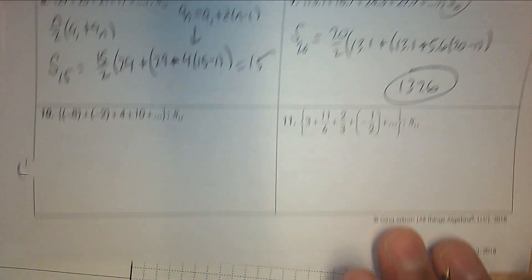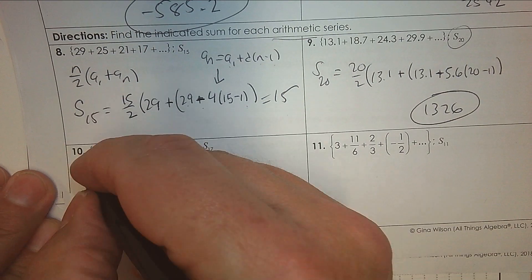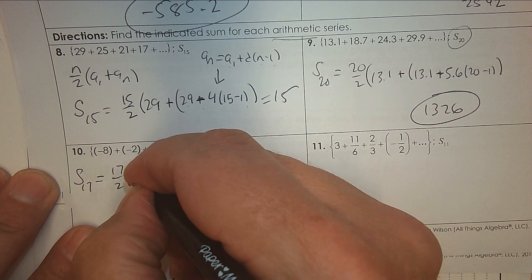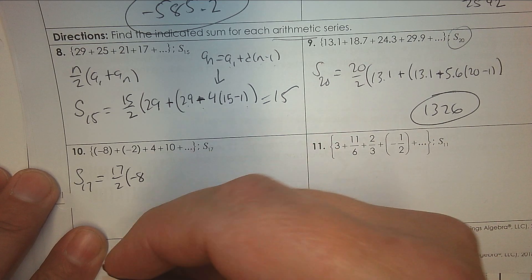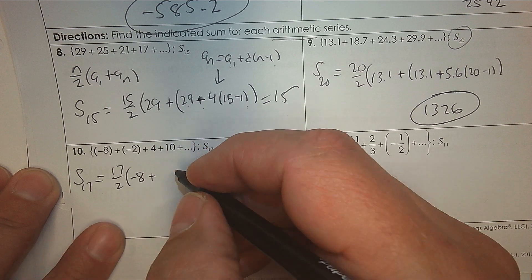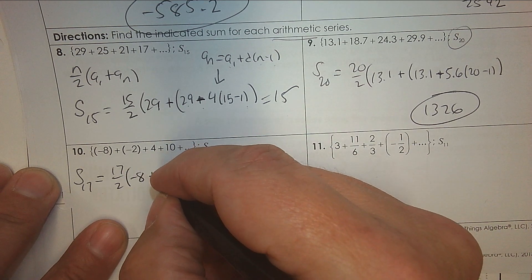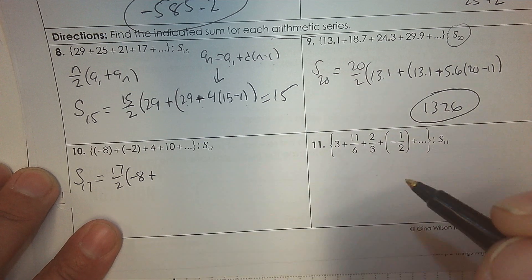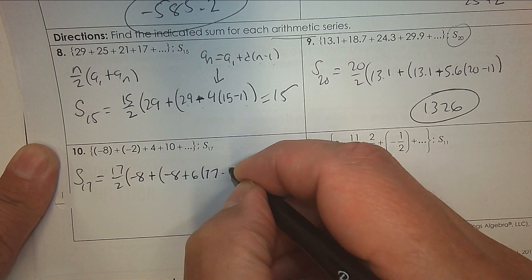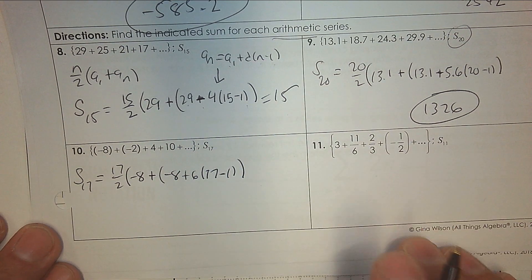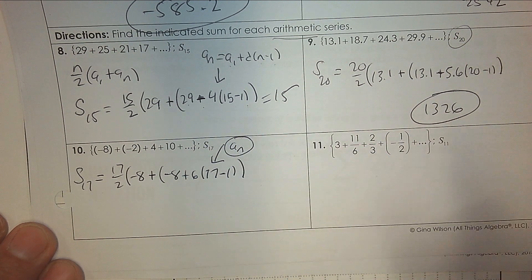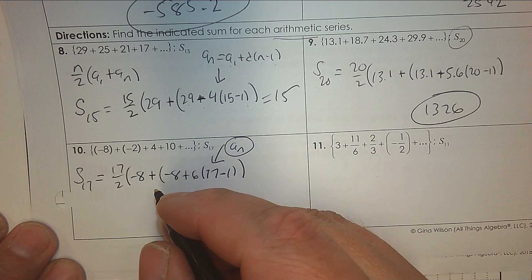Number ten — find the sum of the first 17 terms. So we have 17 terms divided by 2. The first term is negative 8. I don't know the 17th term, so I'll use the rule: I'm adding 6 every time. So negative 8, common difference 6, times (17 minus 1). Put that all in your calculator at once — this second part is just An using the rule. And you get the answer 680. Please use your calculator.